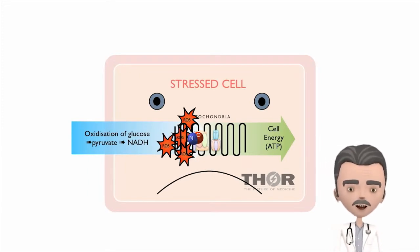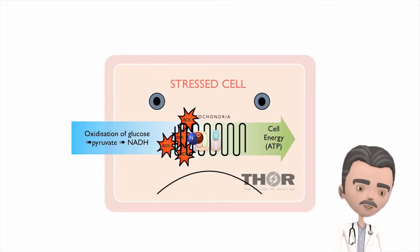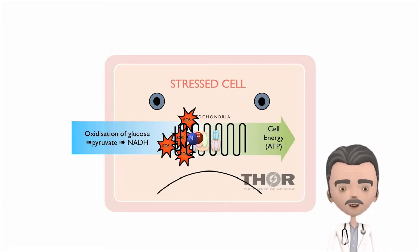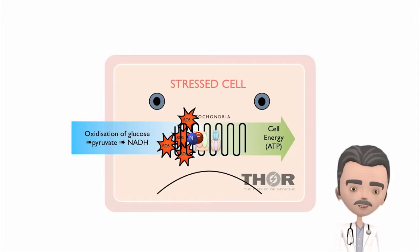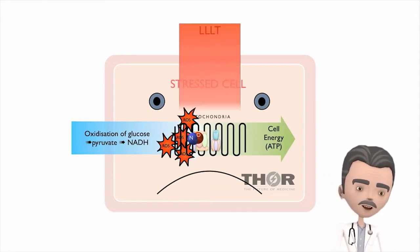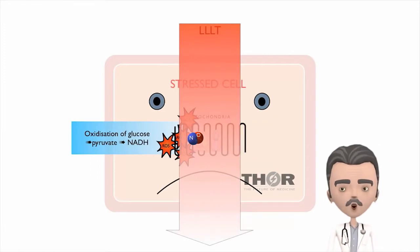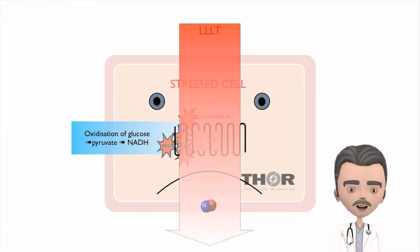Oxidative stress leads to inflammation and cell death via the gene transcription factor NF-kappa B, known as the master switch for inflammation. Low level laser and LED therapy breaks the bond between nitric oxide and cytochrome C oxidase.